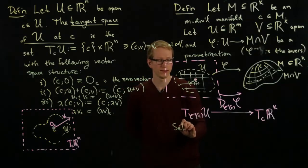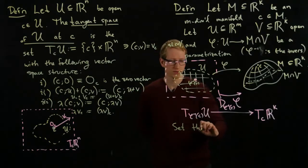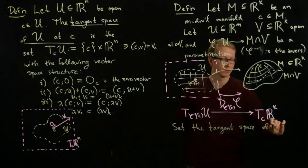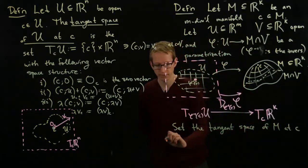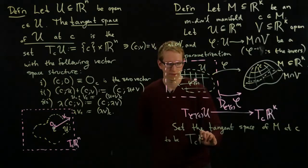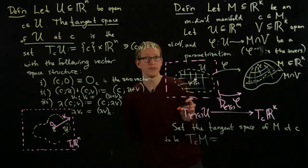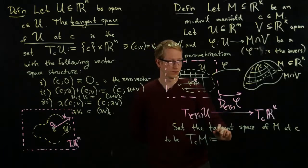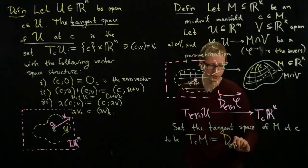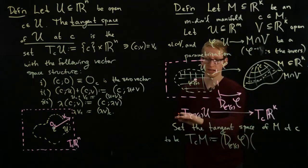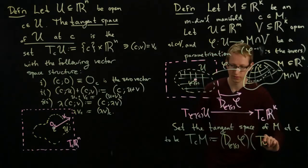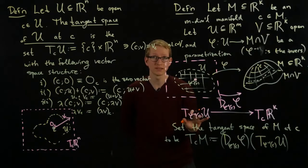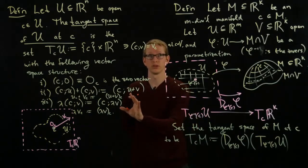Using this linear transformation, we set the tangent space of M at c to be the image of this tangent space, of this vector space, under this linear transformation. So it's d phi at phi inverse c applied to the entire tangent space here. For this tangent space, again, since it's an open subset of Euclidean space, it's just this simple mathematical object.